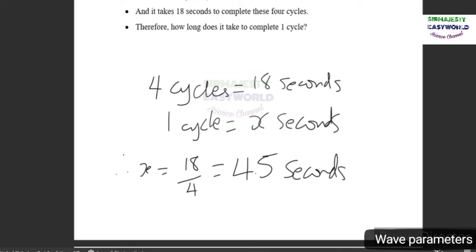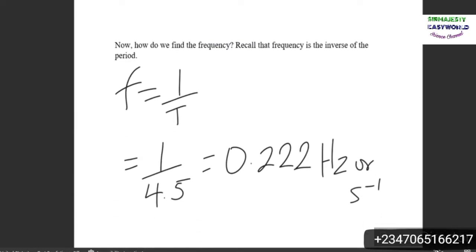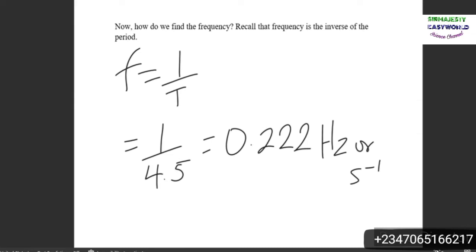Looking for the frequency of this wave, you'll recall that frequency is the inverse of the period. So frequency is one over T and one over T in this case is one over 4.5, equal to 0.222 hertz or seconds to the negative one.